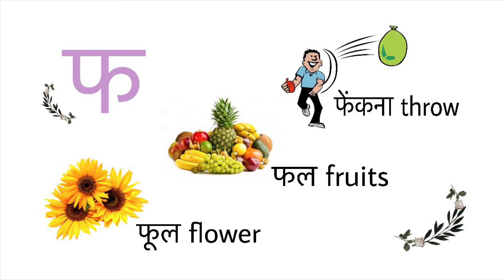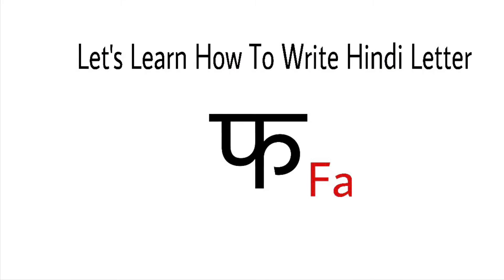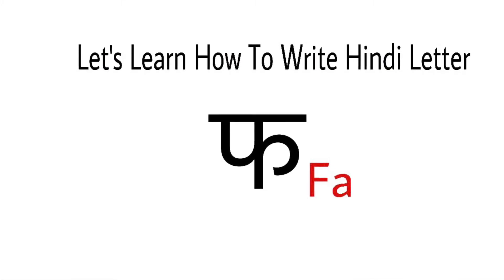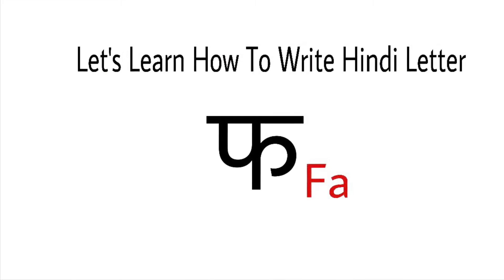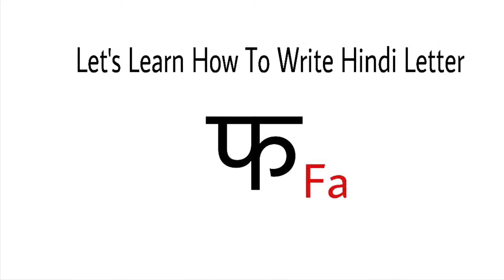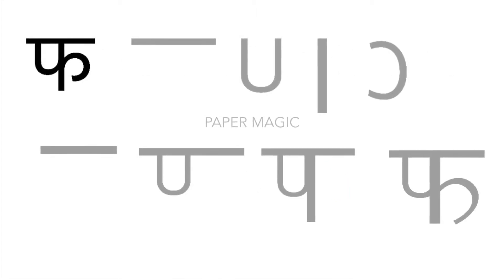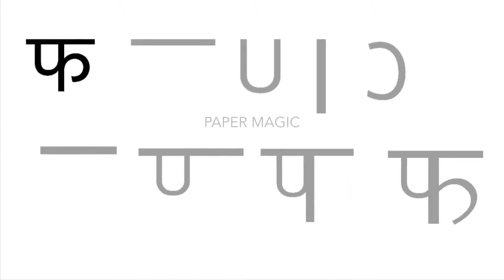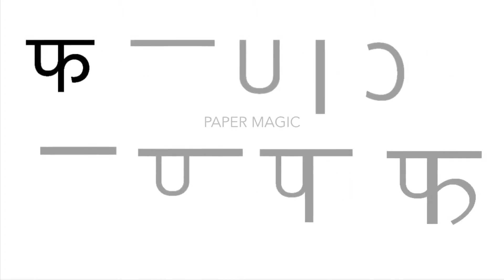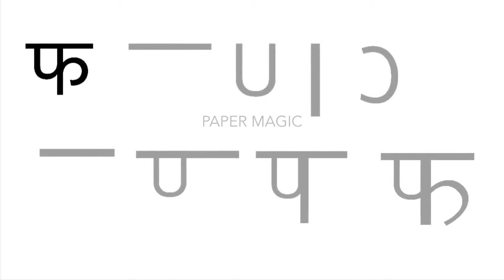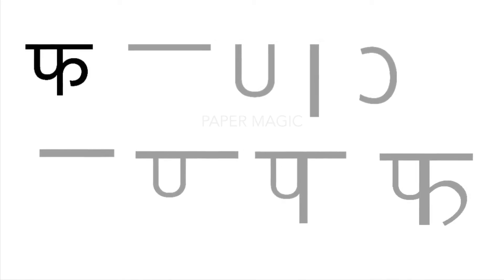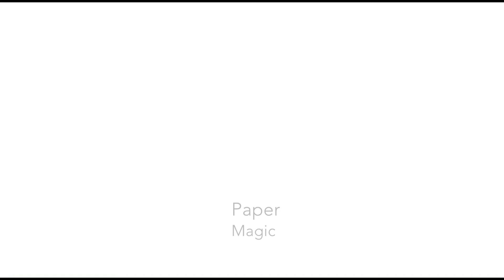Now, let us learn how to write Hindi consonant or alphabet Fuh. To write Hindi consonant Fuh, we will use a sleeping line, an English capital letter U shape or a curve, a standing line, and an English letter C shape but opposite. So first, in your notebooks draw a sleeping line,